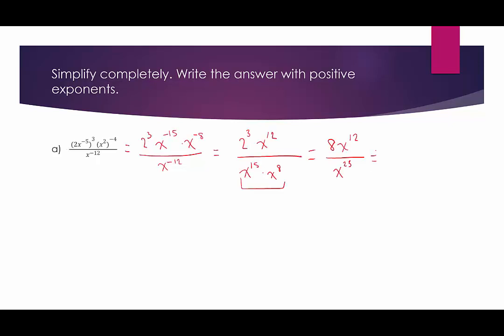Now I have one more step because I have an x in the numerator and an x in the denominator. We use same-base division. I have 11 more factors of x in the denominator, so rather than having a negative 11 in the numerator, I can just say it will be x to the 11th in the denominator. We could rewrite this as x to the 12th over x to the 23rd — those partially cancel, and x to the 11th remains in the denominator. So 8 over x to the 11th is our final answer for this example.